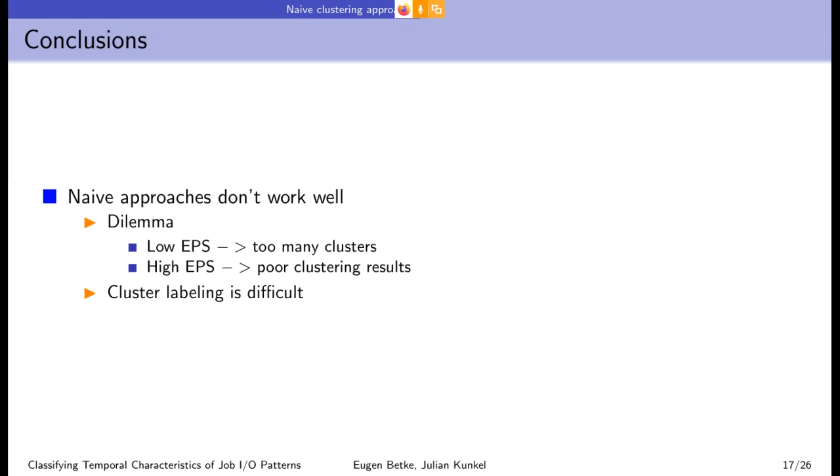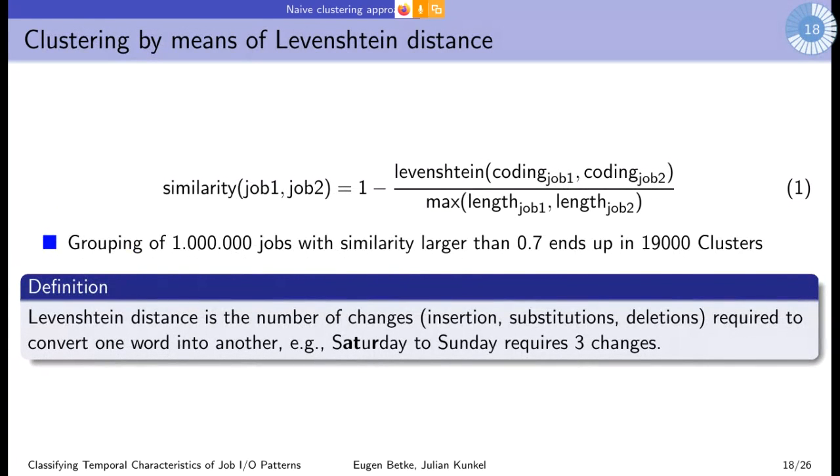For job metrics, for example on the right side, on the bottom, with epsilon value 1.3 we obtain 59 clusters. This is a good number, but it's a bit disappointing because these clusters are polluted with samples from other clusters. In the end we couldn't find a good epsilon value. If you use a small epsilon value we get too many clusters. If you use a high epsilon value we get poor clustering results. Labeling is also difficult. The clusters are polluted, so it's not possible to provide correct labels.